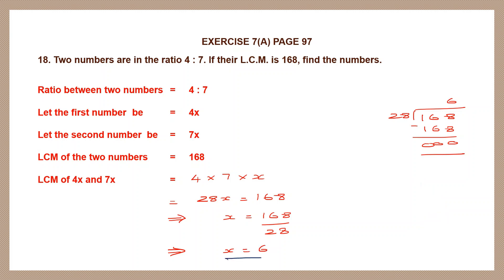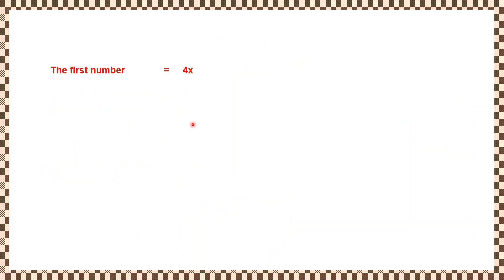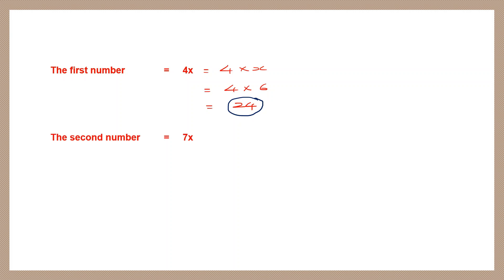Now that we have found x, we can find both numbers. The first number is 4x, that is 4 into 6 — 4 sixes are 24. So our first number is 24. The second number is 7x, that is 7 into 6 — 7 sixes are 42. So our second number is 42.